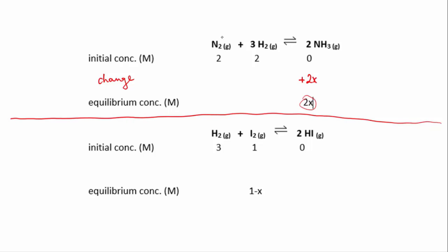Let's do nitrogen. Nitrogen has a one to two ratio with ammonia. So if 2x moles per liter of ammonia was produced, then half as much nitrogen must have been produced. So half of 2x is x, and of course nitrogen is a reactant so it's being used, so that will actually be minus x. So we started with 2, we used up x, so at equilibrium we have 2 minus x.